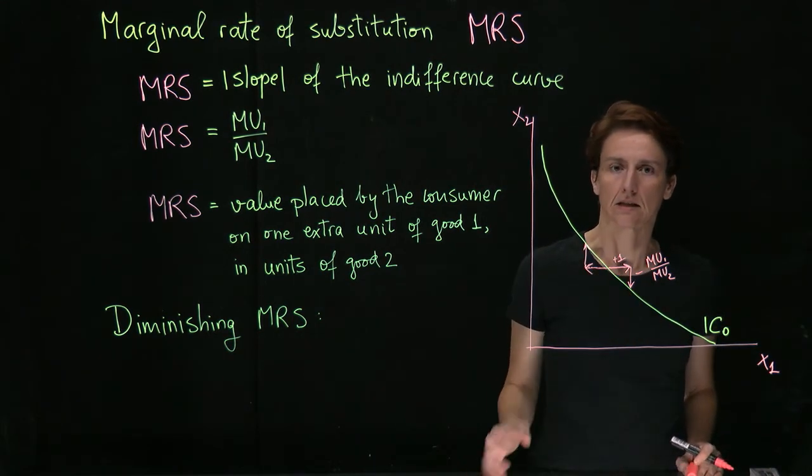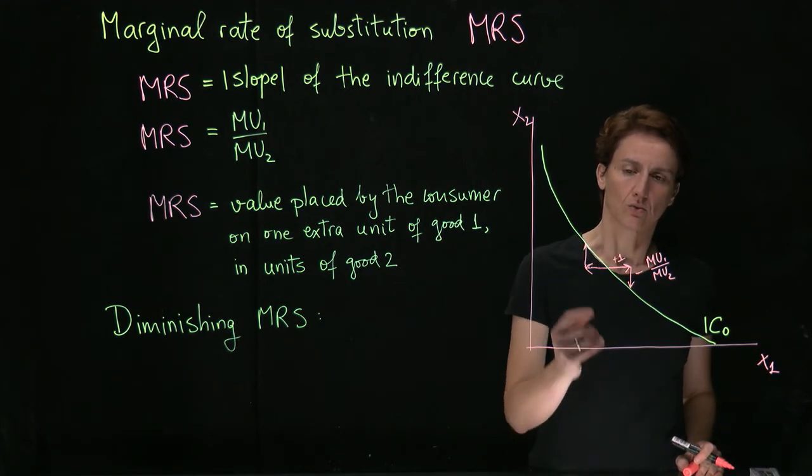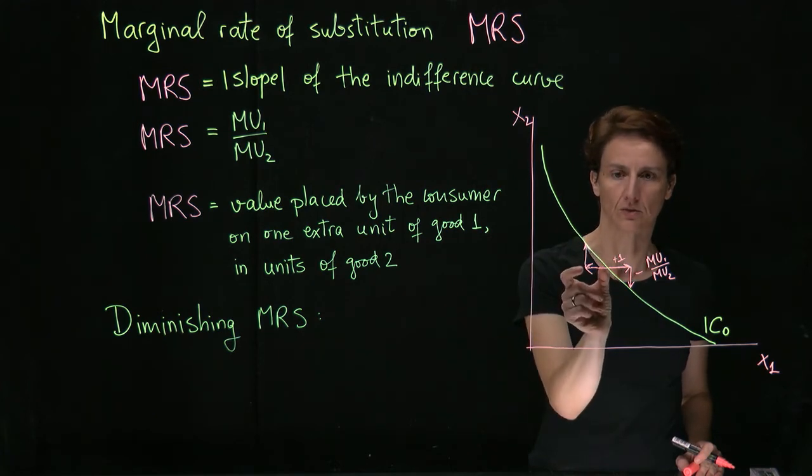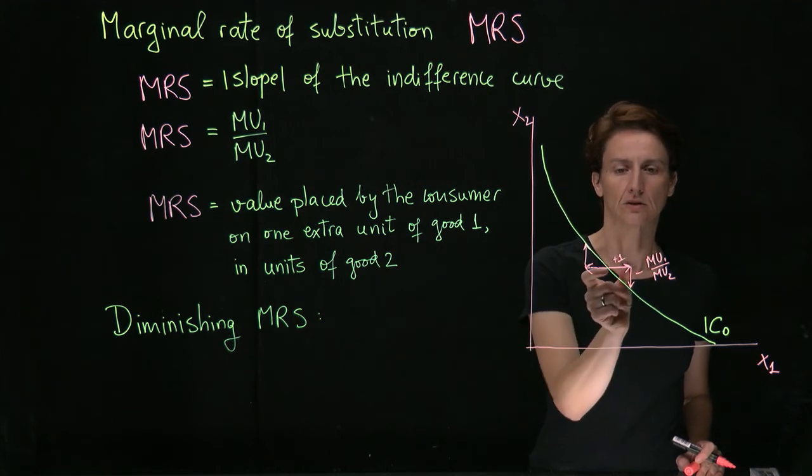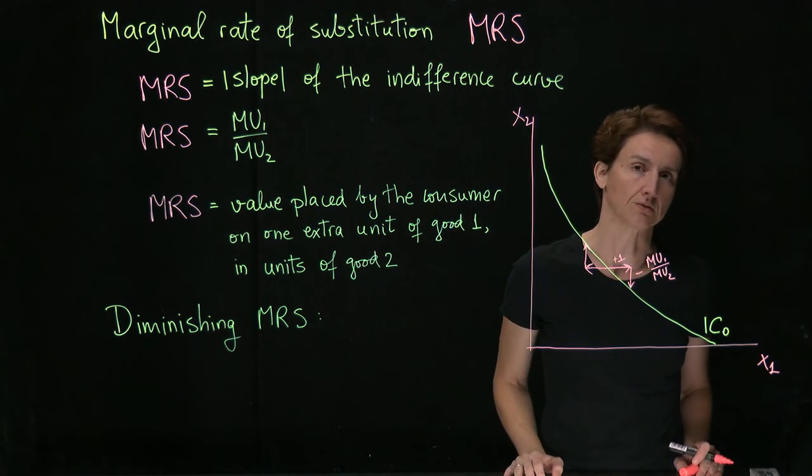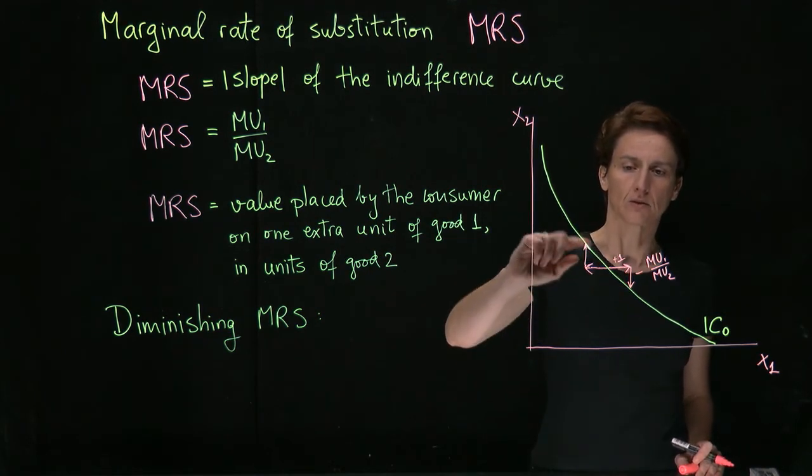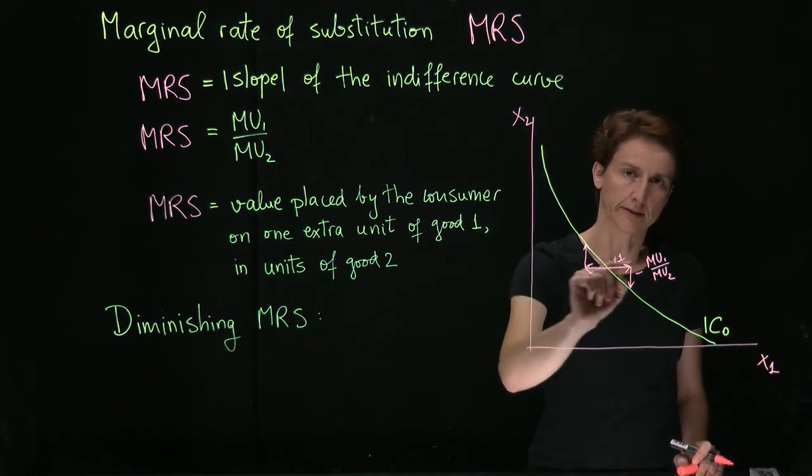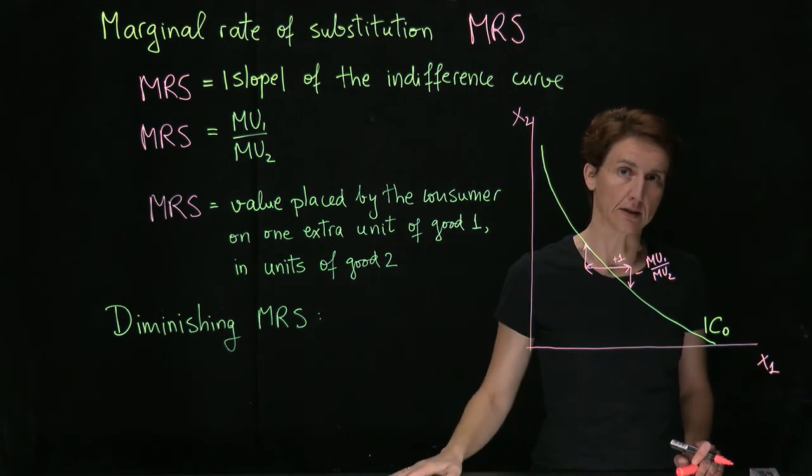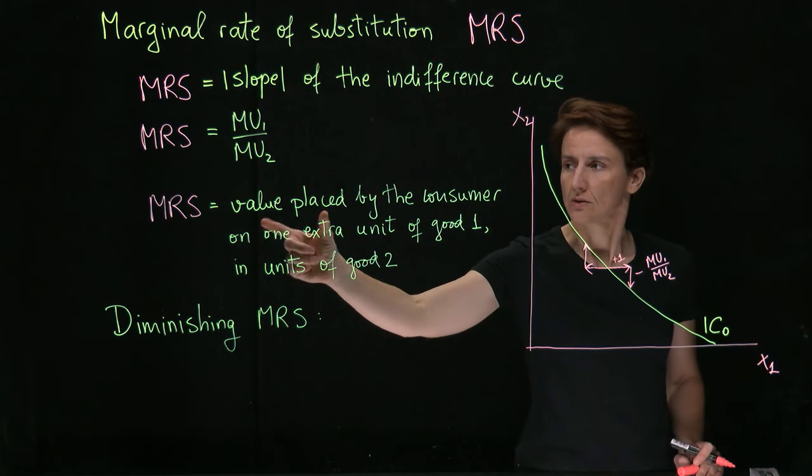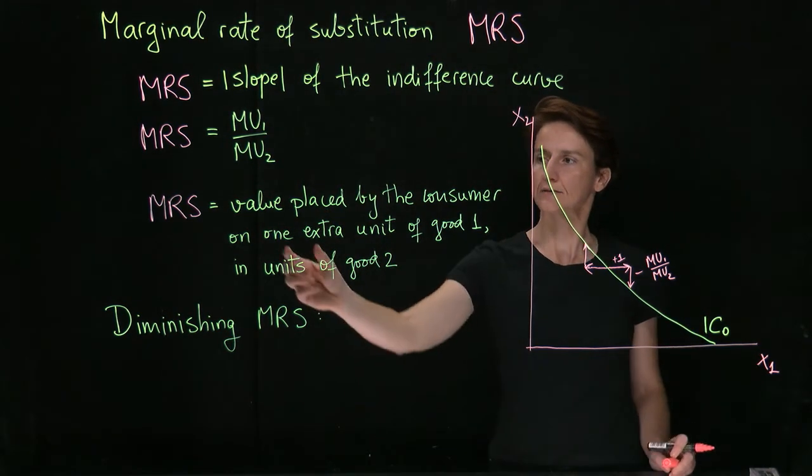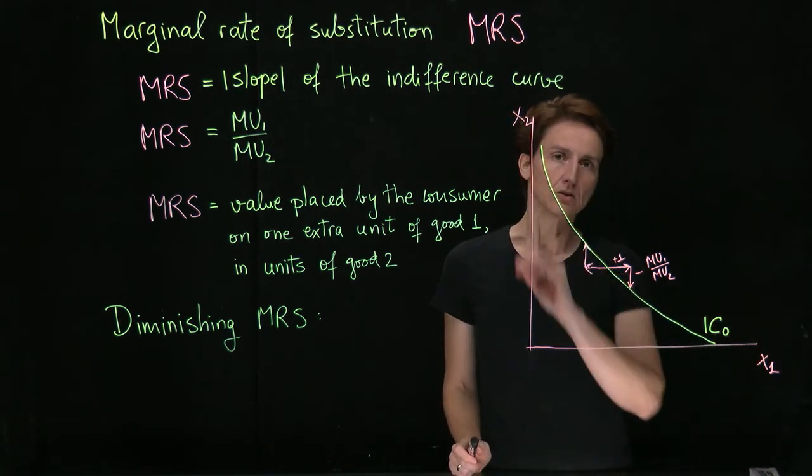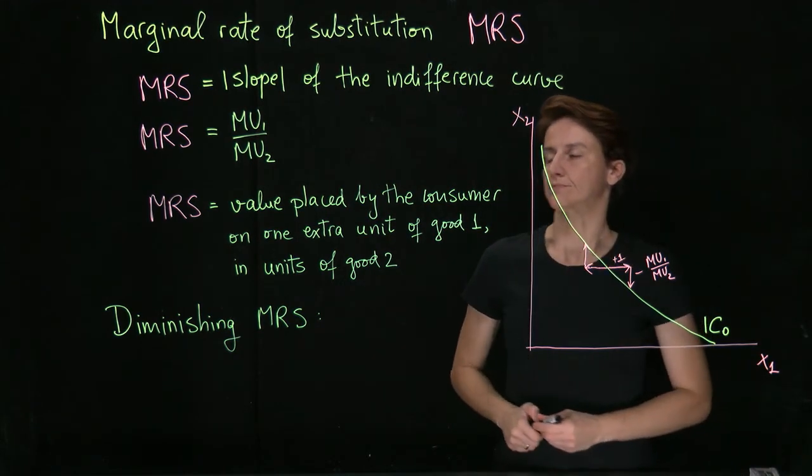And so that is an alternative way of defining the margin rate of substitution. So we could define it as the amount of good 2 necessary to either give to the consumer in order to compensate them for the loss of a unit of good 1, or to take away from the consumer in order to make up for their gain of a unit of good 1. Okay. So either way, it's about the vertical distance that needs to be traveled in order to come back to the indifference curve when we've moved horizontally by 1 unit. And so, therefore, it equals the slope. So the most helpful way to think about it is as the value that the consumer places on good 1, the good on the horizontal axis, as measured in units of the good on the vertical axis.